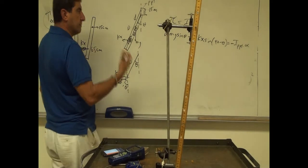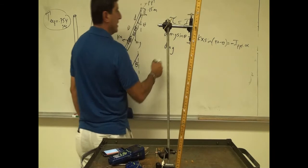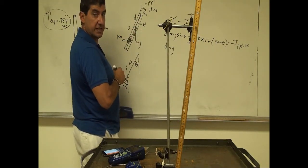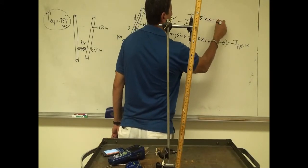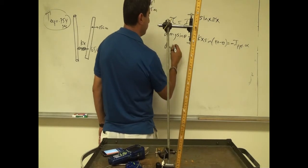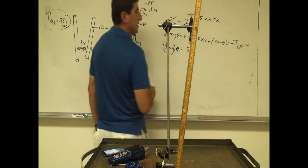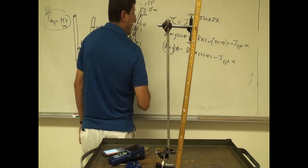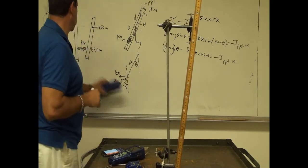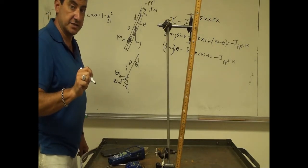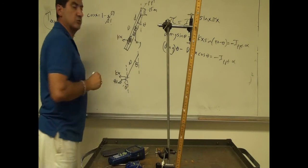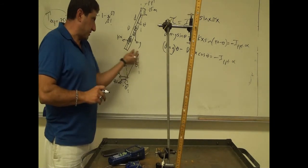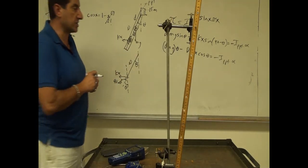Now I simplify using the small angle approximation. For small angles, sine of theta ≈ theta, so the mg term becomes d·mg·θ. For cosine theta, the small angle approximation gives cosine x ≈ 1, so the kx term simplifies since we assume we haven't displaced the ruler by very large angles. So cosine theta is just 1.